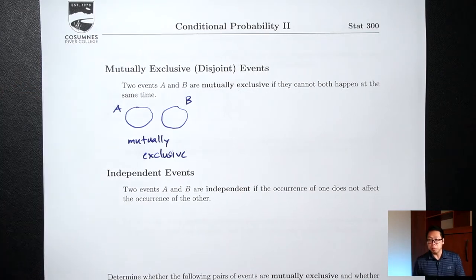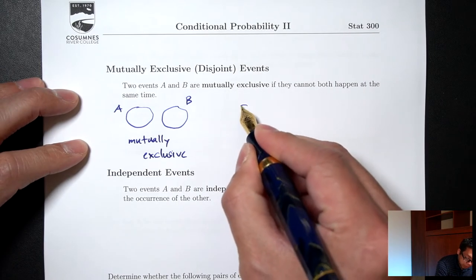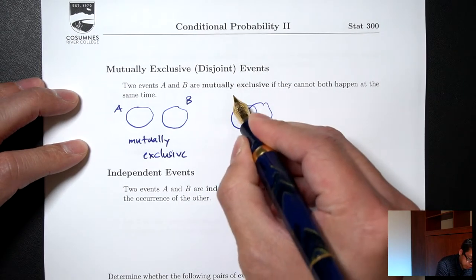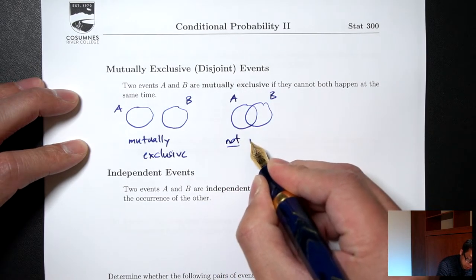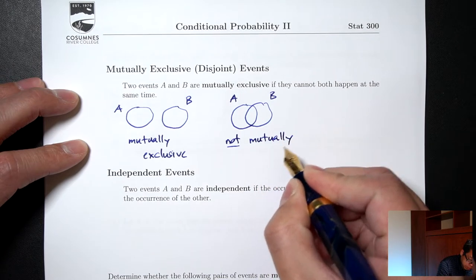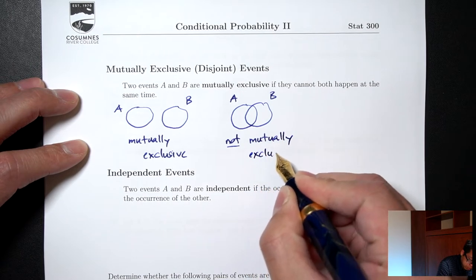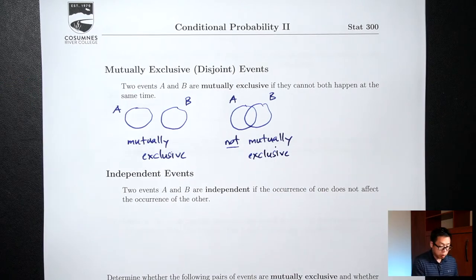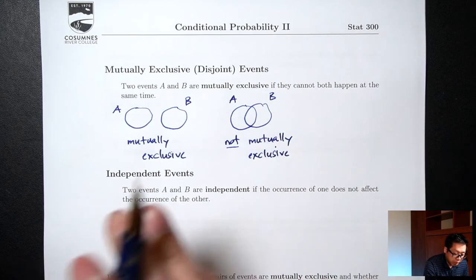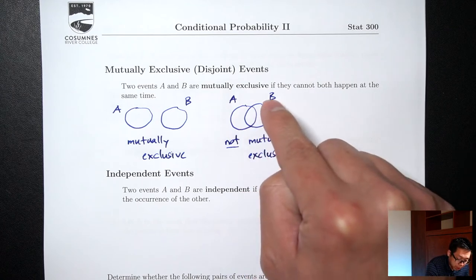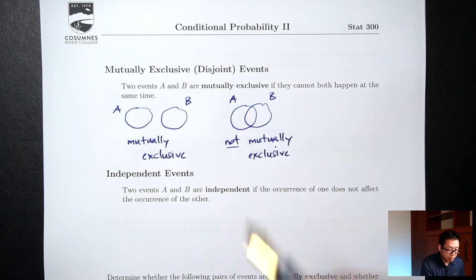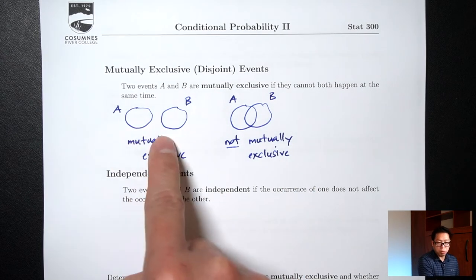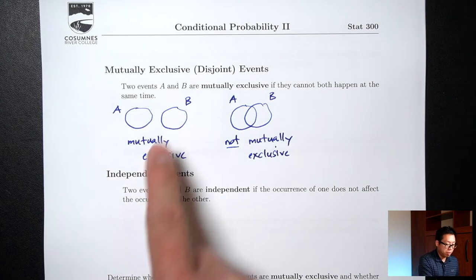The representation for not mutually exclusive would be two circles that do overlap. This is a representation of not mutually exclusive. In this picture there is a way for you to be in both circles at the same time — if you are in the overlapping area, you are in circle A and at the same time in circle B. That's why sometimes mutually exclusive is also called disjoint, meaning the circles are disjoint.